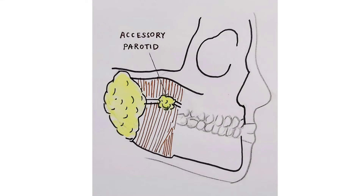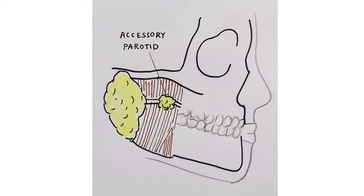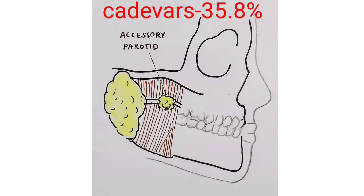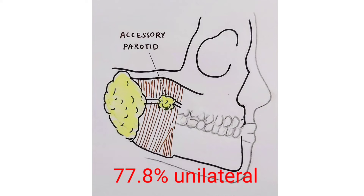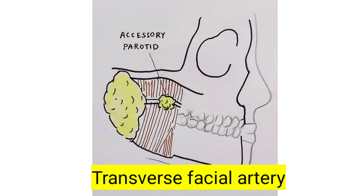Separated from the main parotid gland, there may be glandular tissue over the parotid duct — that's the accessory parotid gland. This is not seen in every individual; it is an anatomic variation seen in around 30% of the population. Studies on cadavers found a prevalence of 35.8%, and in 77.8% of cases it was present only on one side. These accessory parotid glands have their own blood supply from the transverse facial artery and a secondary duct emptying into Stenson's duct. Clinically, it is more prone to parotid tumors and can complicate parotidectomies, so it is mandatory to identify and remove it during parotid removal surgeries.